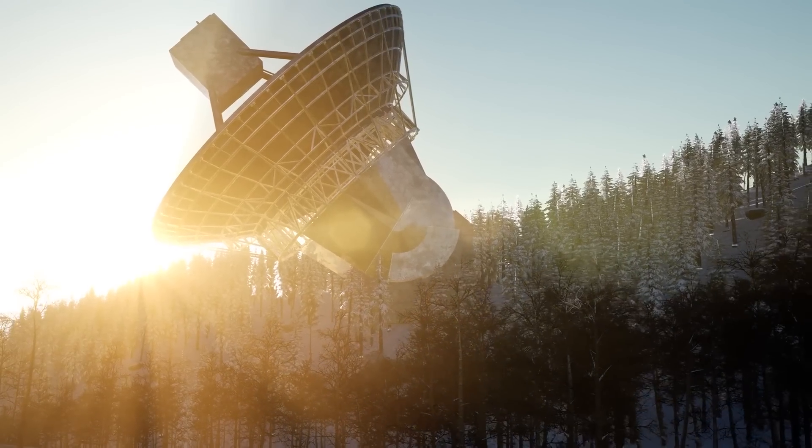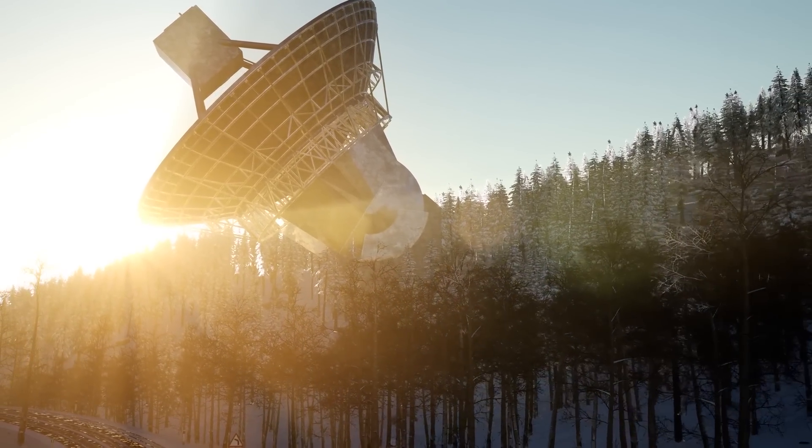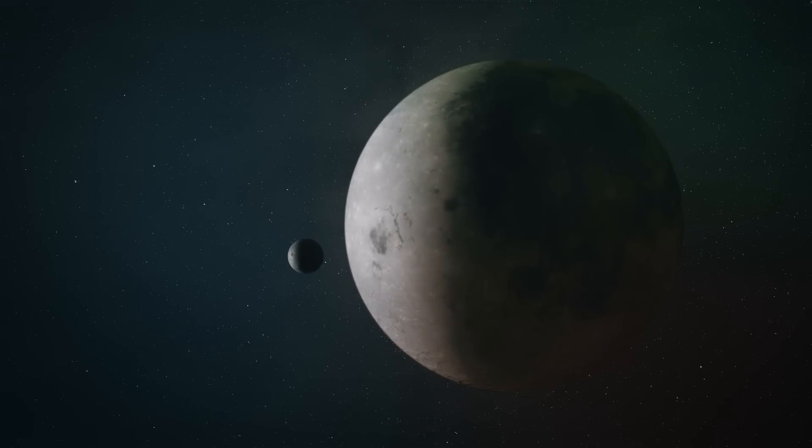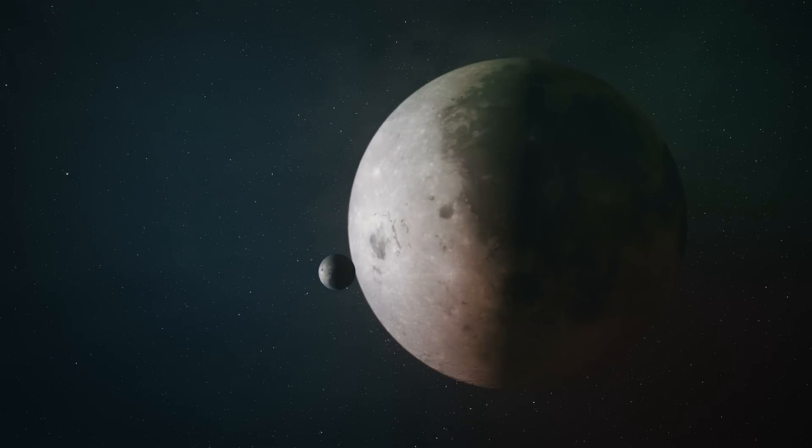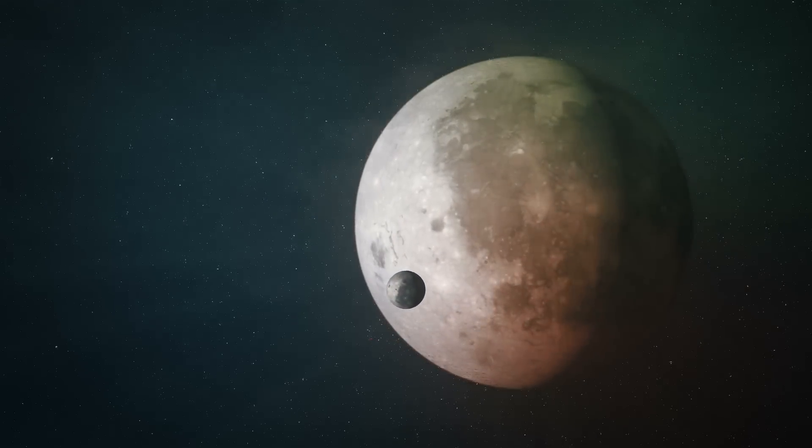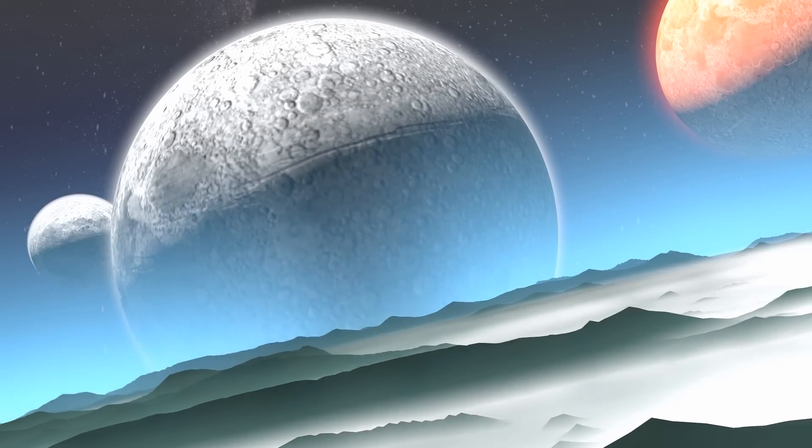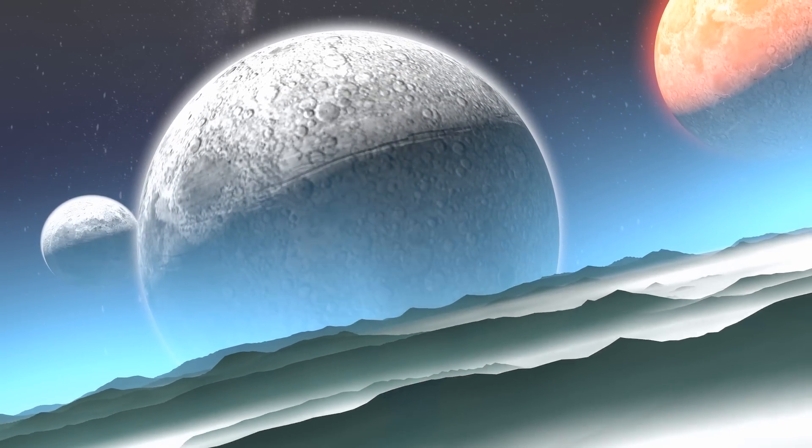When astronomers were studying this star, they discovered two new alien worlds. The first planet is called PDS-70b. Its mass is roughly 4 to 17 times the mass of Jupiter, and it orbits about 2 billion miles away from its parent star.